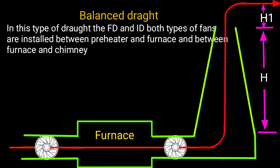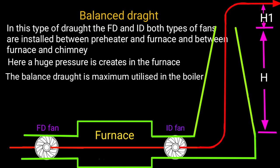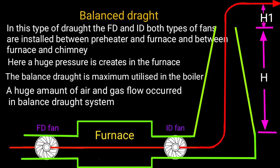Balanced draught. In this type of draught, both FD and ID fans are installed between preheater and furnace, and between furnace and chimney. Here, a huge pressure is created in the furnace. Balanced draught is maximally utilized in boilers. A huge amount of air and gas flow occurs in balanced draught systems.